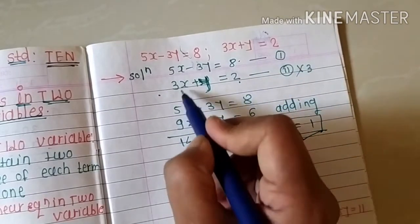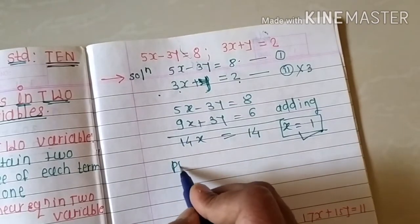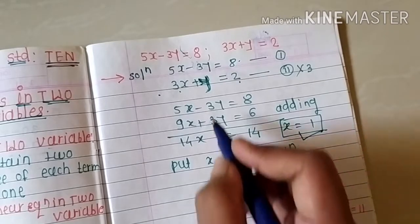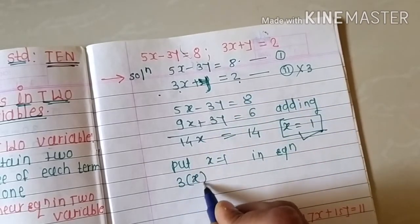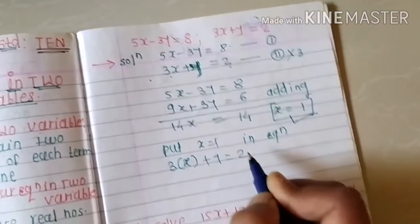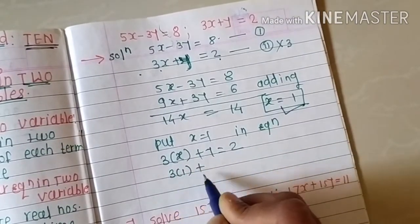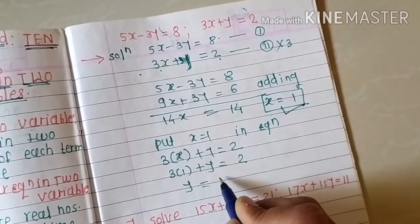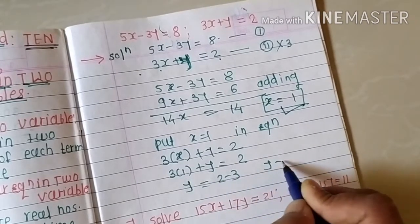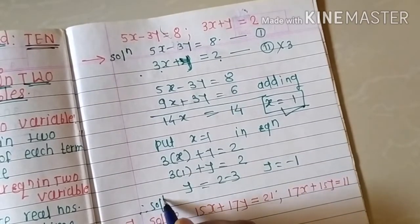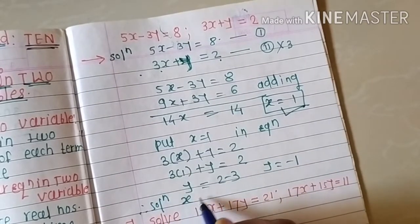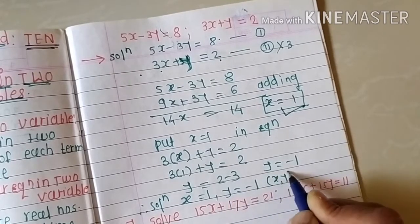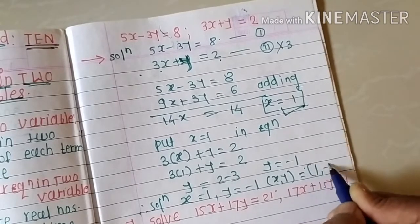Substitute x equals 1 in equation two: 3 times 1 plus y equals 2, so y equals 2 minus 3, giving y equals minus 1. The solution of the simultaneous equation is x equals 1, y equals minus 1, or as an ordered pair (1, −1).